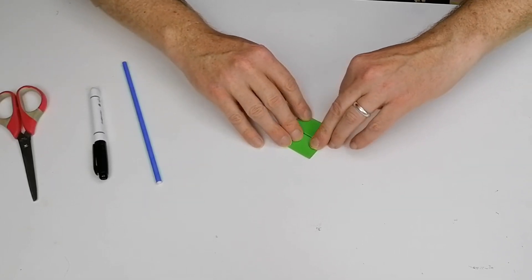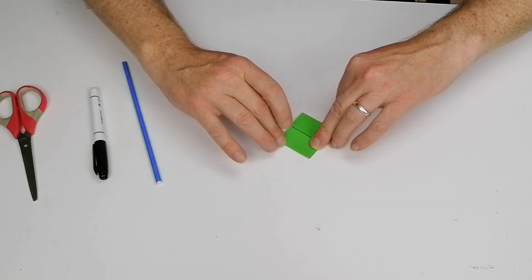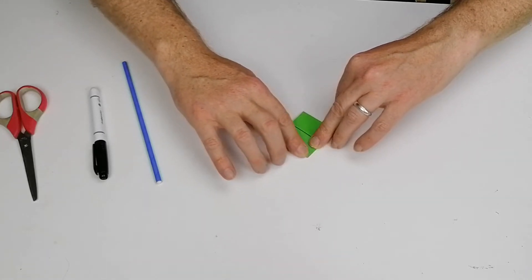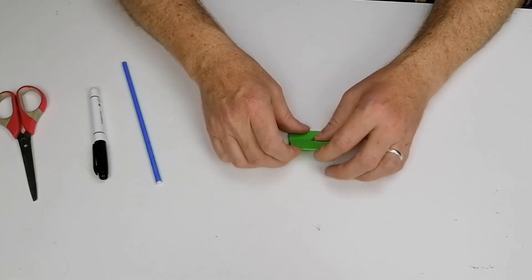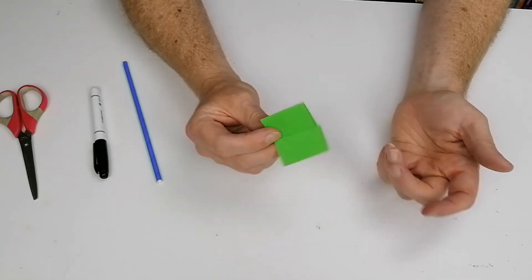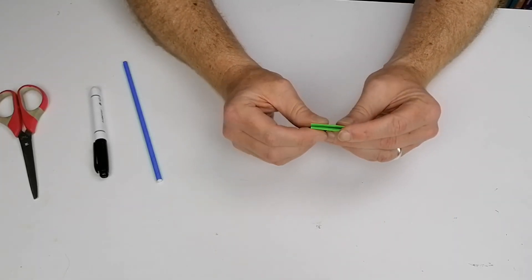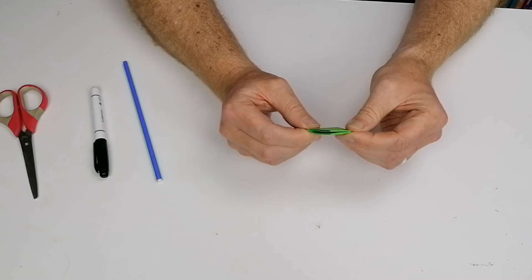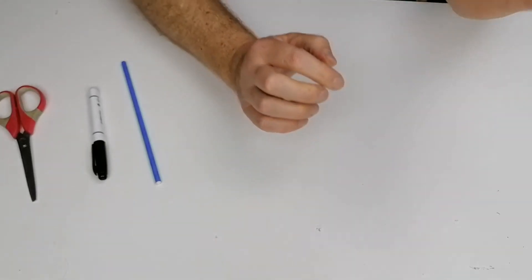Now at this point there's a lot of folds on the card here so that takes a little bit of strength to push that down. What you're going to do now is just fold that in together. Now you have basically one strip of card folded over eight times or so.